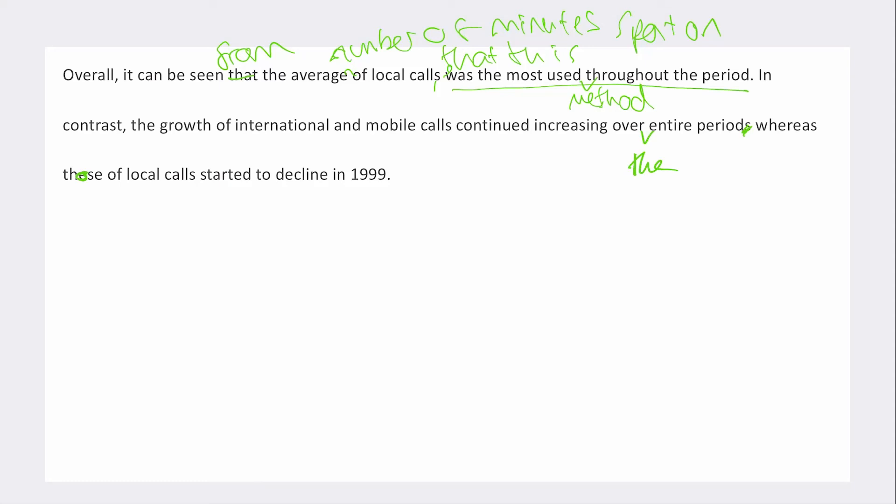Whereas those of local calls started to decline in 1999. So the conclusion actually is okay - this should really be the overview. This should go before the detail. Okay, you don't need a conclusion for task one. You need an overview. So what this candidate has done is they put that overview at the end of their essay.